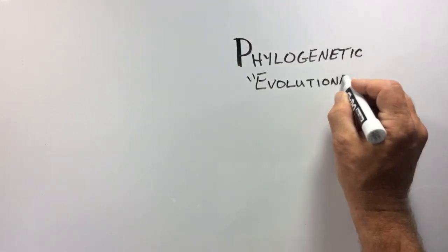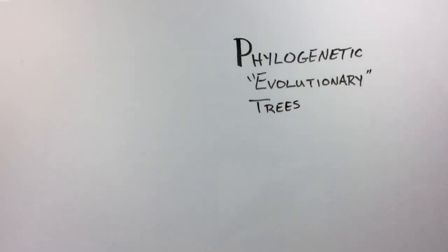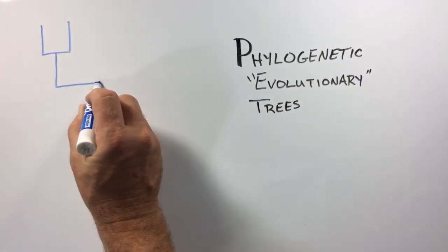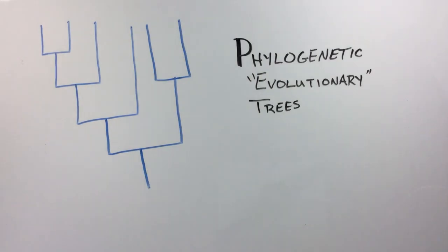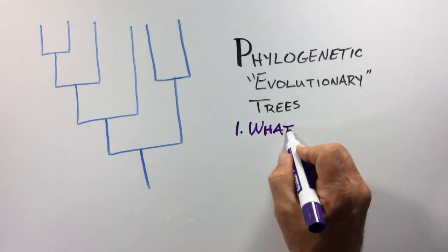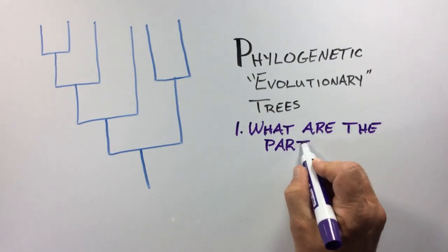Phylogenetic or evolutionary trees are diagrams used throughout biology in studies ranging from conservation to epidemiology. They contain a great deal of information about the evolutionary relationships and diversification within and among different kinds of organisms. This video will address the following questions about phylogenetic trees.